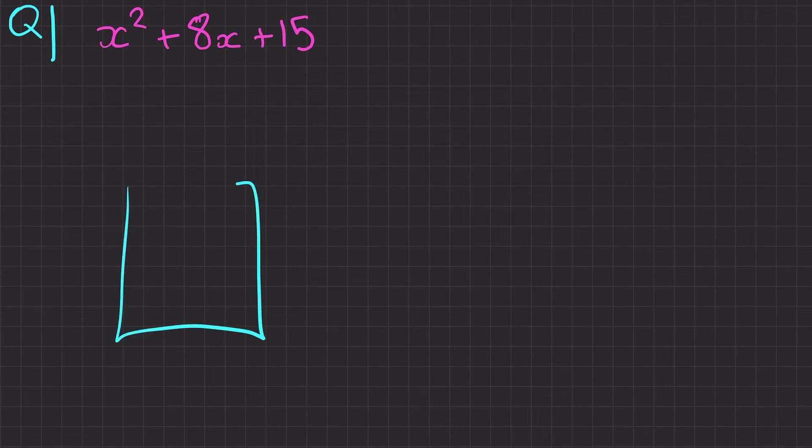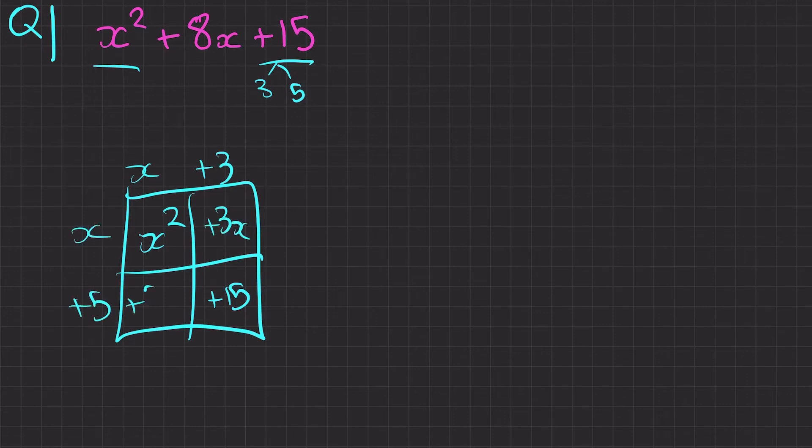Question 1. So we've got our grid. We've got x squared, I'm going to pop here. Plus 15, I'm going to pop here. We've got 3 and 5. Actually, 3 times 5 is 15. 5 add 3 is 8. So I'm going to put x plus 3, x plus 5, plus 3x, plus 5x. Yep, 5x plus 3x equals plus 8x. Therefore, our final answer for this one will be x plus 3, x plus 5.